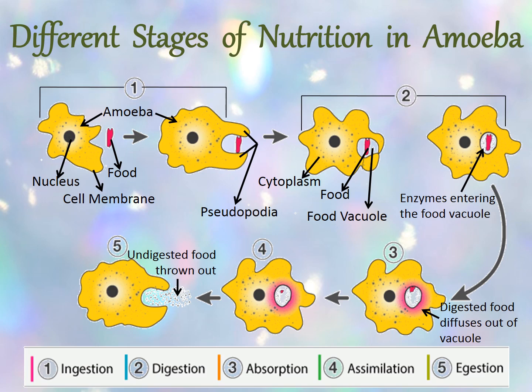Look at the picture. You can see in the first step, when it senses its food, it pushes out pseudopodia surrounding the food particles and engulfs it. In the second step, the food becomes trapped into the food vacuole. Once trapped, digestive enzymes are secreted into the food vacuole to break it down into simple substances.